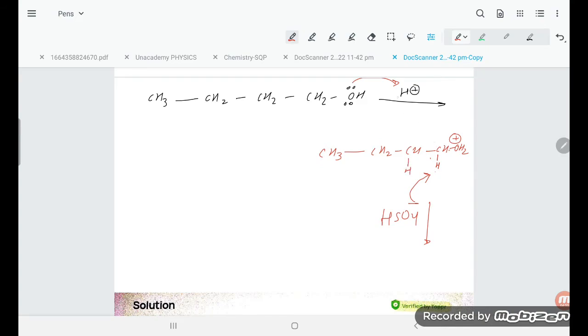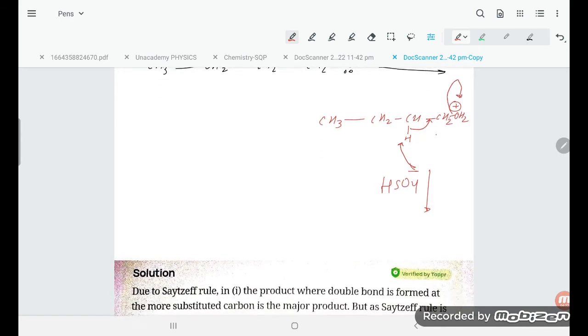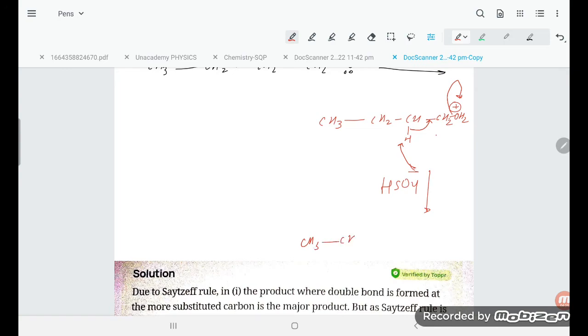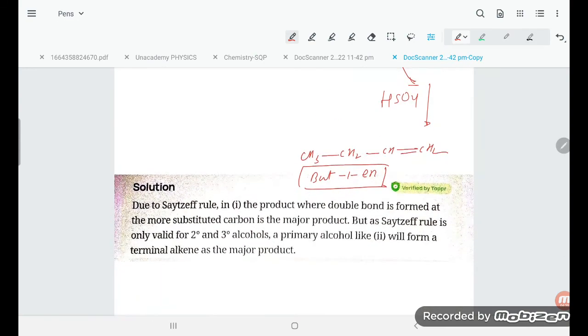So here I am taking - better you can write like this - it is CH2 as it is. This bond is taken, hydrogen is taken by HSO4-. It is taking this one, so this bond is shifting here. As a result, this is going out. So let us see the product: CH3-CH2-CH=CH2. That is but-1-ene or butene is going to be formed.